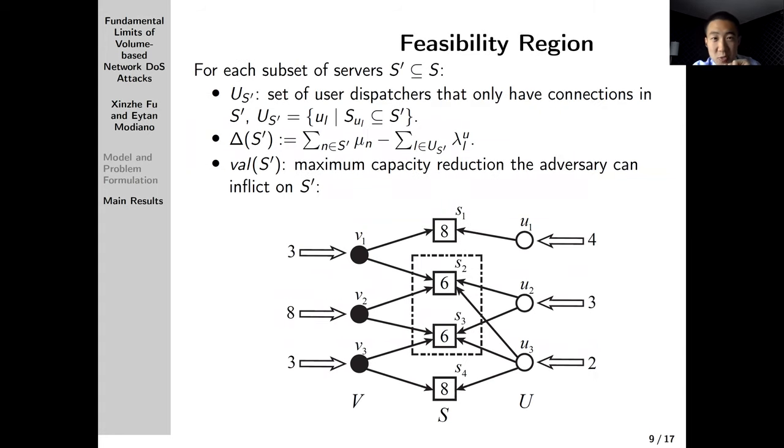Let's start from the feasibility region. To do this, we need some further definitions. For each subset of the servers S' that is in S, we use U_S' to denote the set of user dispatchers that only have connections in S'. Basically the user traffic from U_S' can only go to S'. S' sort of traps this U_S'. If you look at this example and we focus on S2 and S3 as S', then U_S' is this singleton set U2. The traffic from U2 can only go to S2 and S3. We define Δ(S') as the capacity margin of the subset of servers. It's defined by the sum of the service capacity in S', minus the sum of user traffic arrival rates in U_S'. In this example with this S', Δ(S') will be 6 plus 6 minus 3, that is 9.